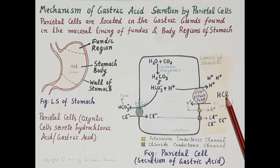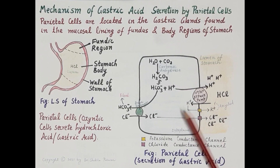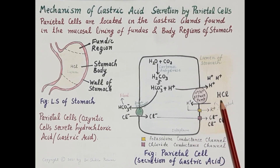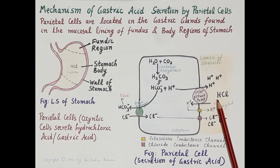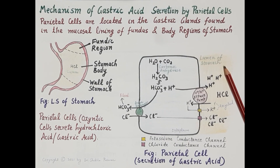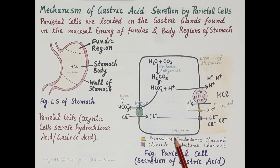These potassium ions and chloride ions then diffuse out of the parietal cells, where hydrogen ions combine with chloride ions to produce gastric acid, or hydrochloric acid. This is how parietal cells secrete hydrochloric acid into the gastric pit, from where it is released into the lumen of the stomach as part of gastric juice.